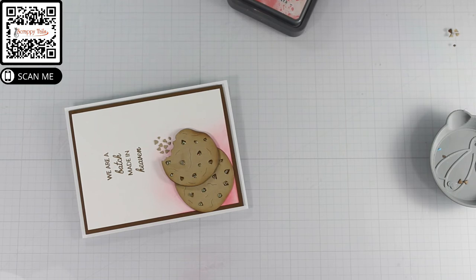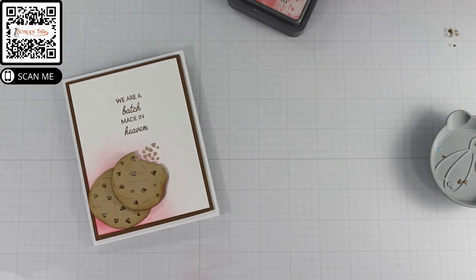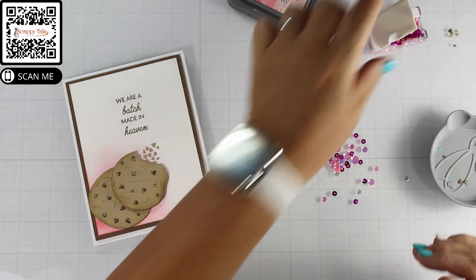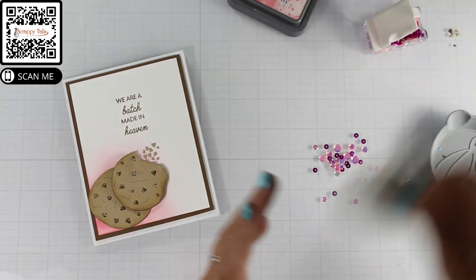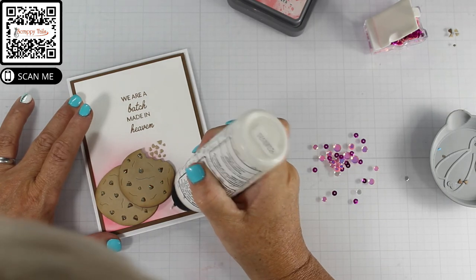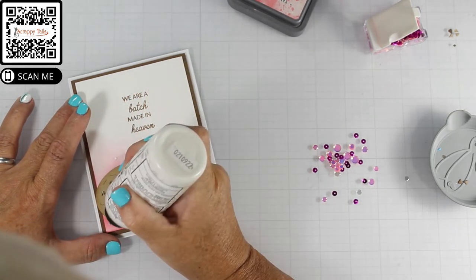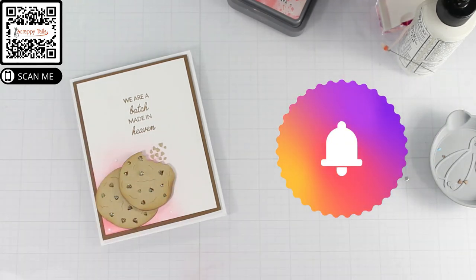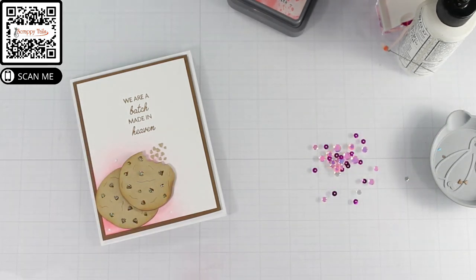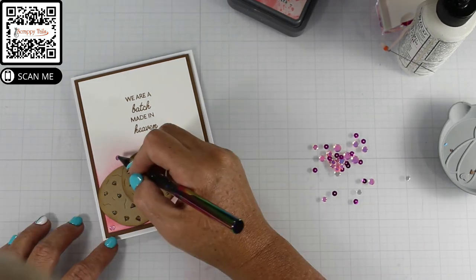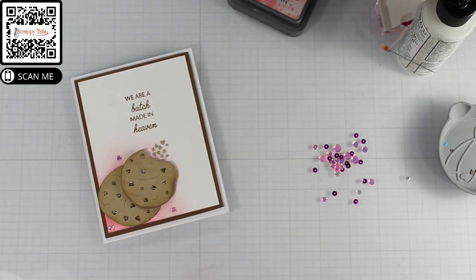And then finally to embellish my card, I come in with some flat backed sequins just from my stash in a pink. And again, I just chose the pink because it's one of my favorite colors. I've kept it simple because my husband prefers simple. Like I said, he doesn't like crumbs, so he's not going to like a lot of sequins either. So this was definitely tailored around the recipient and not by the maker. That is for sure.